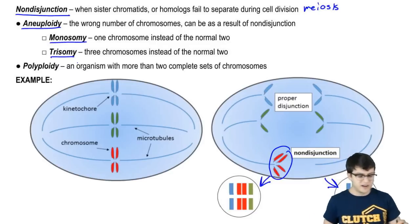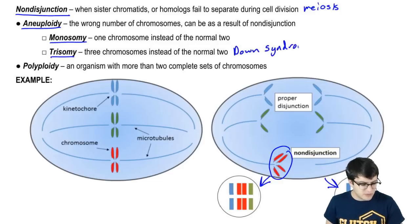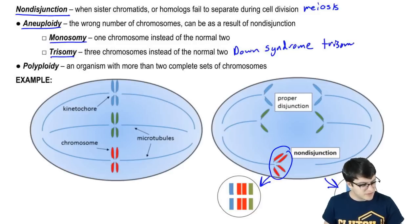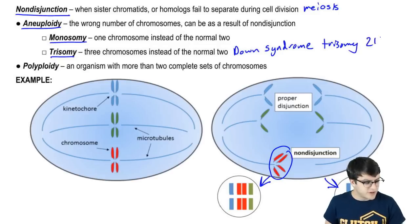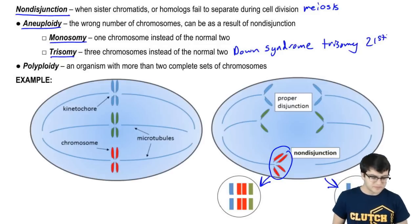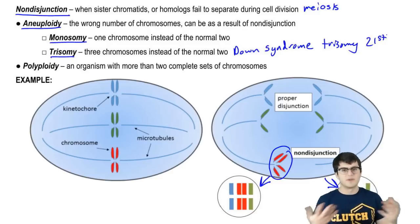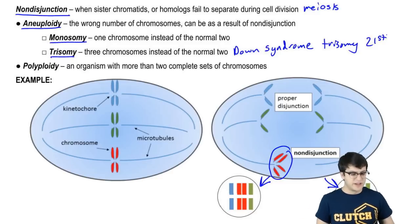A very common example of trisomy is Down syndrome in humans. Down syndrome results from trisomy of the 21st chromosome, and there are a number of symptoms that go along with this.